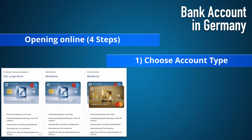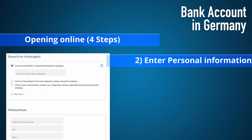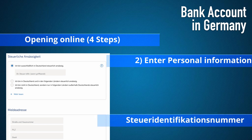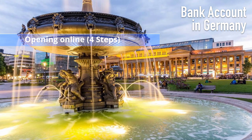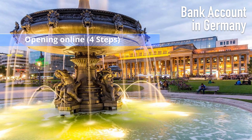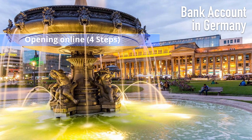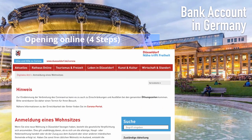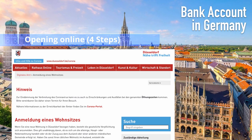Step one is to choose your bank account type and whether or not you want a credit card or overdraft capability. Step two is to enter your personal information — importantly, your tax identification number, not to be confused with your tax number. Your tax identification number is attached to you permanently and will follow you throughout Germany, whereas your tax number is applied to your business. If you're a freelancer or have a business, you get a tax number depending on where you live, and if you move to another part of Germany you'll get a new tax number. Your tax ID number always stays the same, and you receive it when you first register to live in Germany at the city registration office.